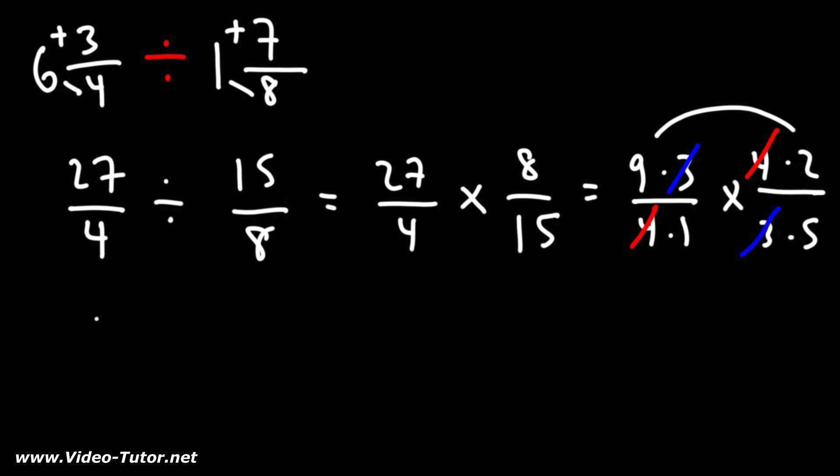So now let's multiply across. 9 times 2 is 18. 1 times 5 is 5. So we have the answer as the improper fraction, 18 over 5.